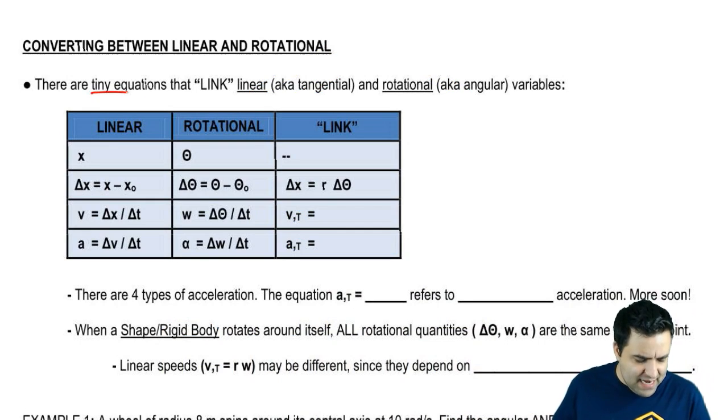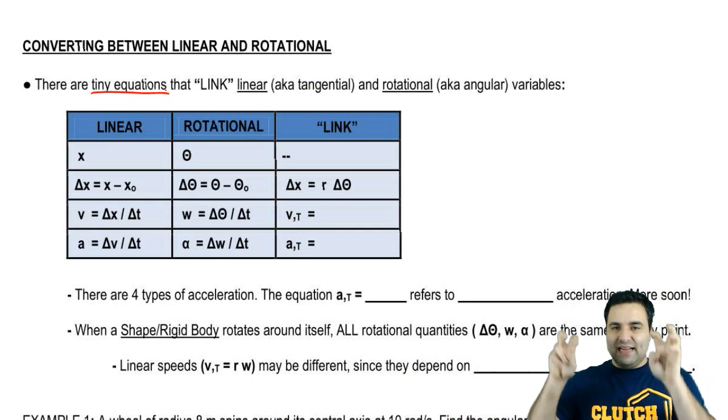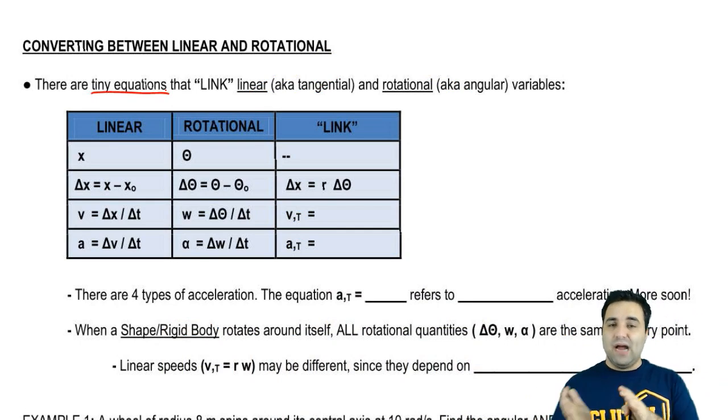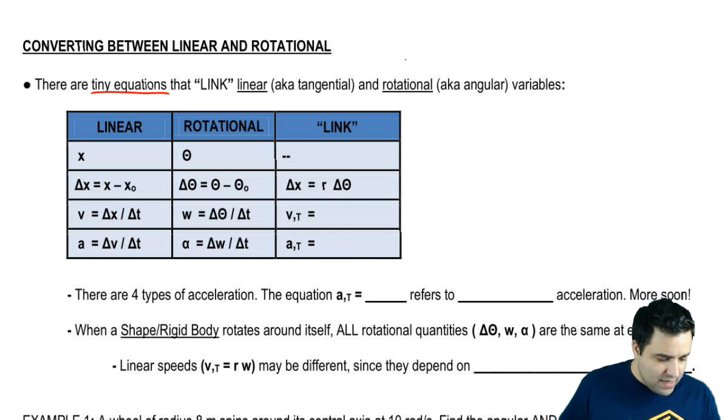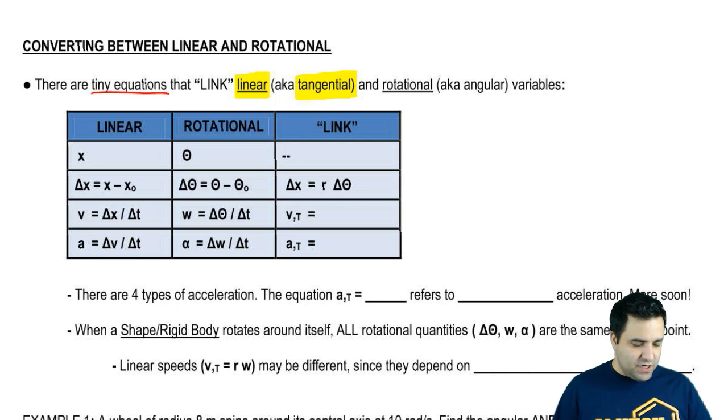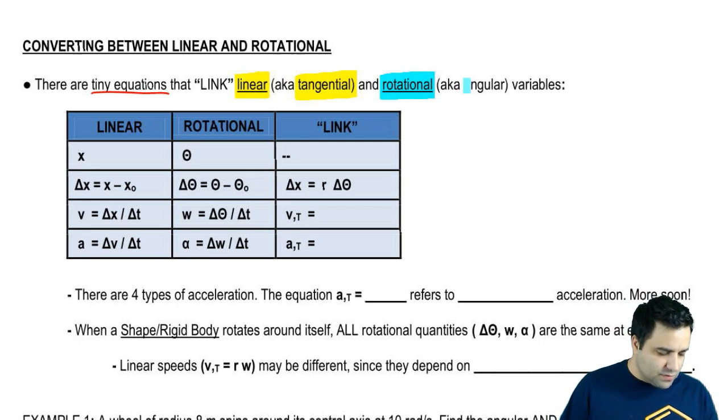All right, so we have these tiny equations that are going to allow us to convert from one to the other between linear and rotational. Now, linear, we're also going to refer to as tangential, right? Linear, tangential, both of these are going in a straight line. We're going to connect from linear or tangential to rotational, which is also referred to as angular. So it's important that you know that these words mean the same thing.